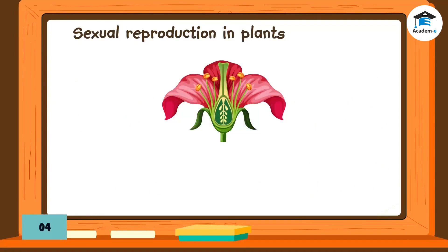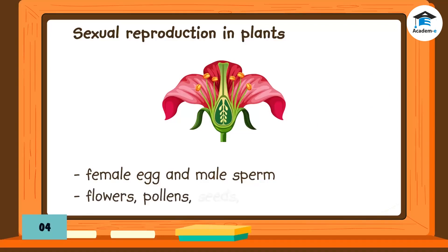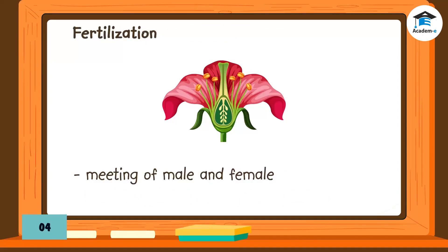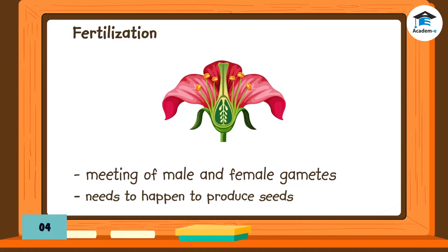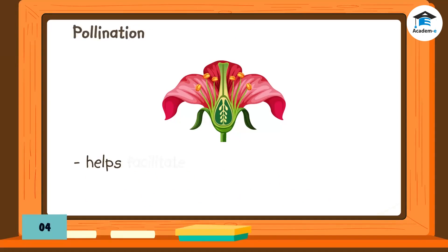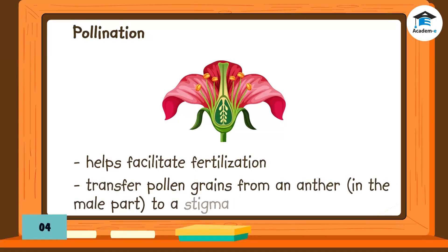Similar to animals, sexual reproduction in plants involves female eggs and male sperm. It involves flowers and pollens to produce seeds, cones, and fruits. Fertilization — the meeting of male and female gametes — must happen for flowers to produce seeds. Pollination helps facilitate fertilization by transferring pollen grains from an anther in the male part to a stigma in the female part.